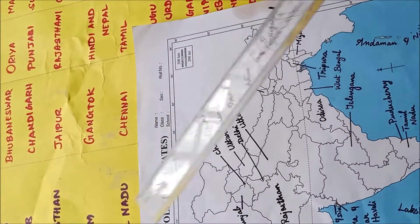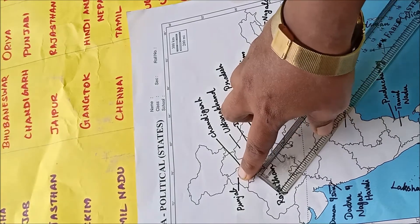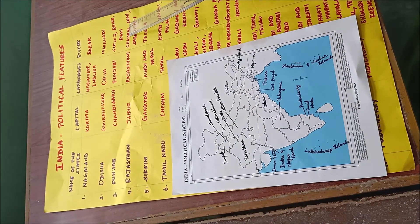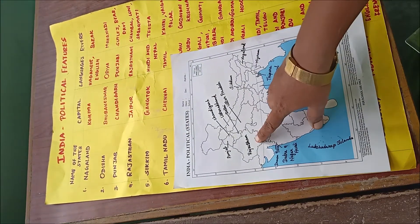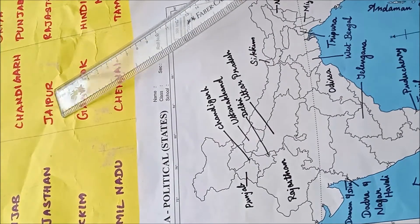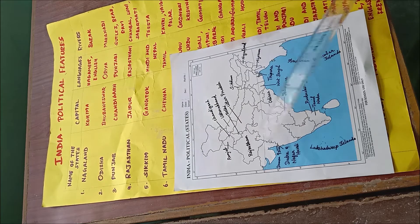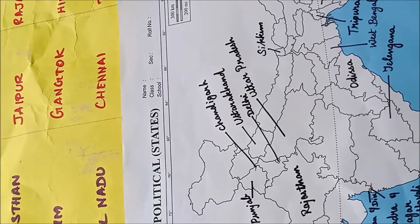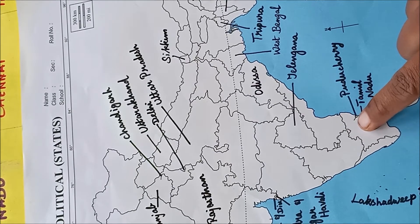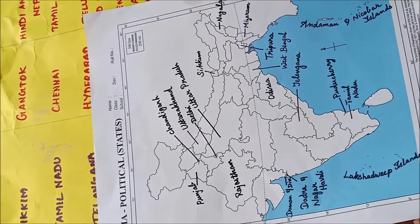Continuing the chart review: Rajasthan — capital Jaipur, language Rajasthani, rivers Chambal, Luni, and Sabarmati. Tamil Nadu — capital Chennai, language Tamil, rivers Kaveri, Vaigai, and Palar. Telangana — capital Hyderabad, languages Telugu and Urdu, rivers Godavari and Krishna — split from Andhra Pradesh.